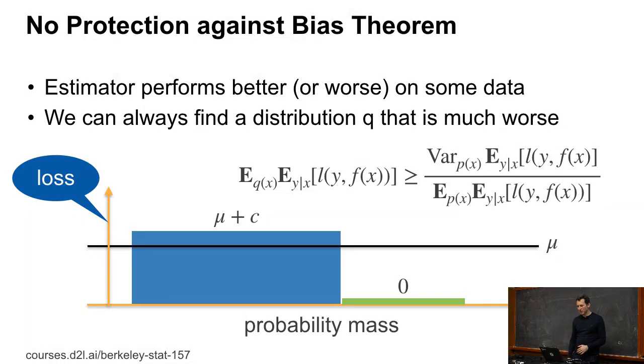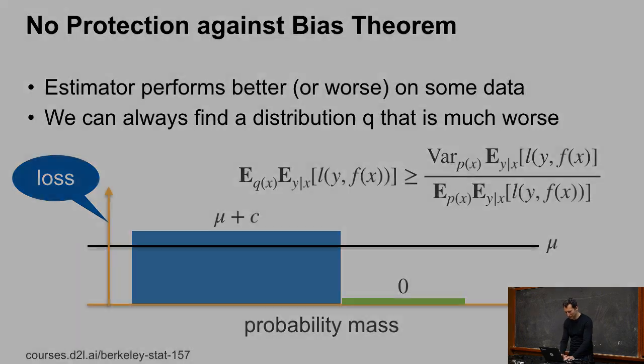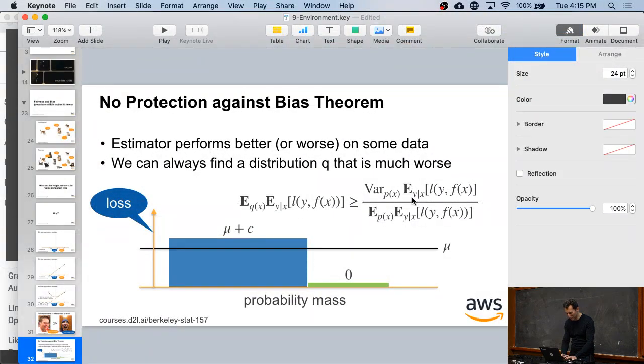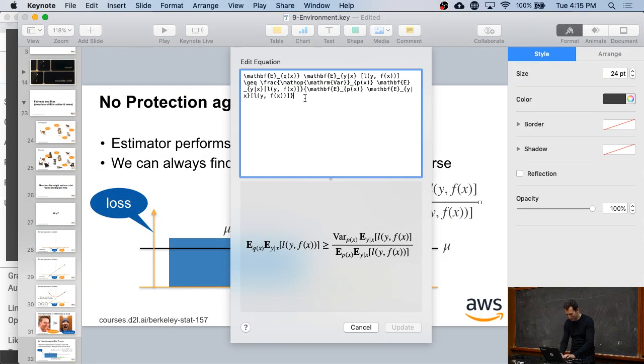So in other words, variance divided by mean is, and actually this is, it's still incorrect because I need to add plus mu to it. Sorry.